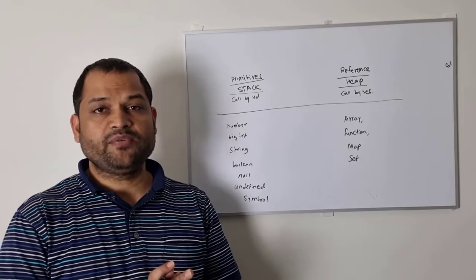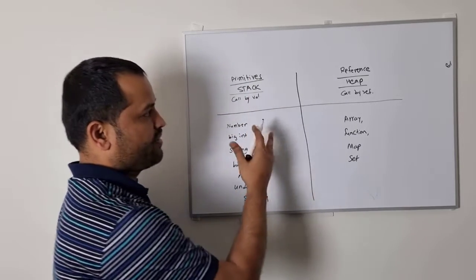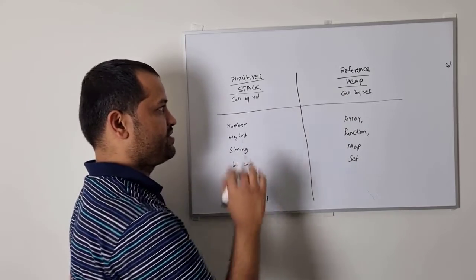The types can be divided into two categories. The first one is primitives, as you can see in this left column, and the other one is reference types.